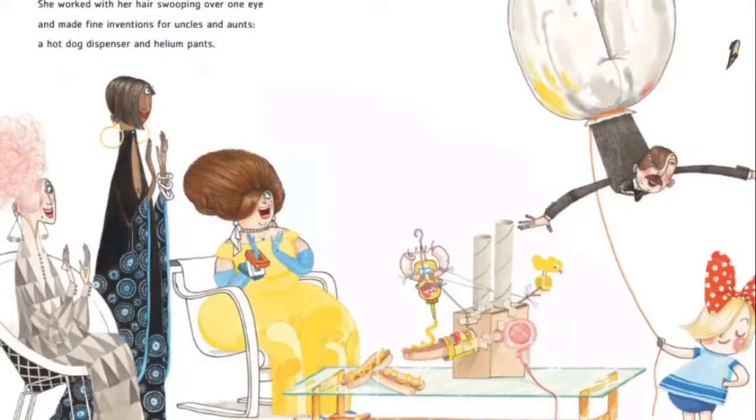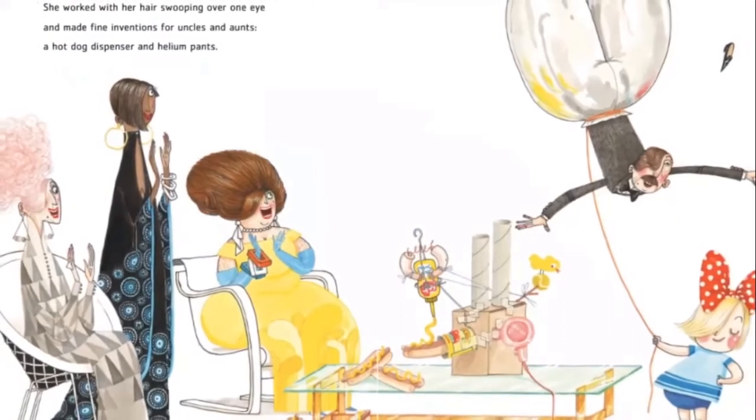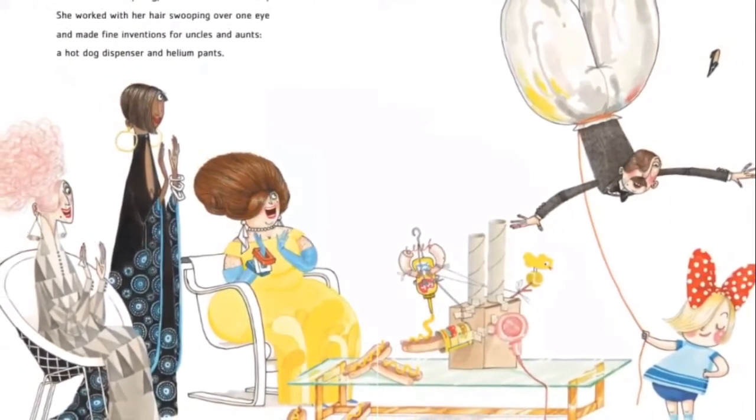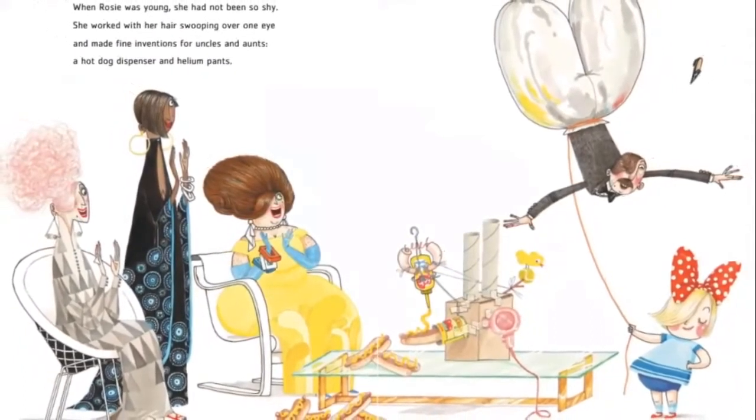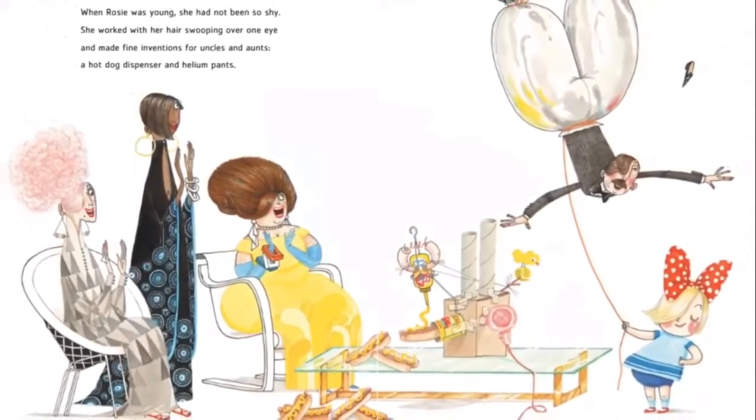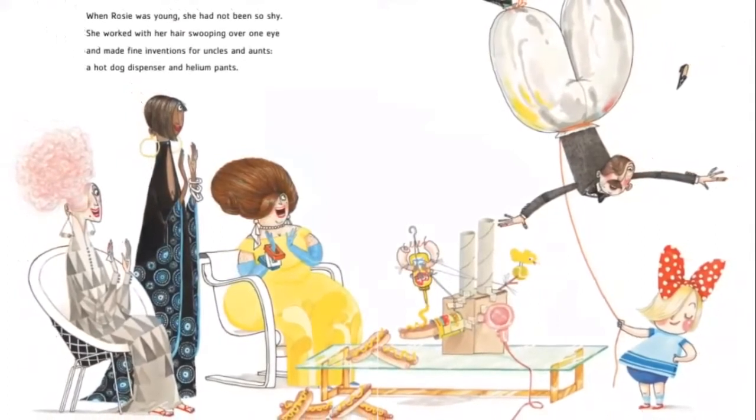When Rosie was young, she had not been so shy. She worked with her hair swooped over one eye and made fine inventions for uncles and aunts, a hot dog dispenser and helium pants.